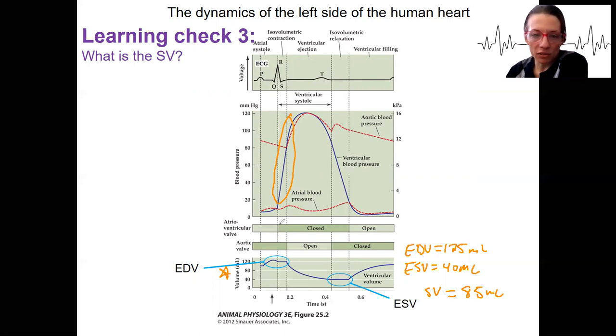So the AV valve is going to close just before that isovolumic contraction. I'll call it here. And going to correspond with that sharp increase in pressure. When that pressure gets great enough,